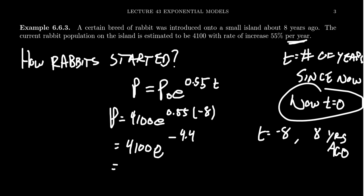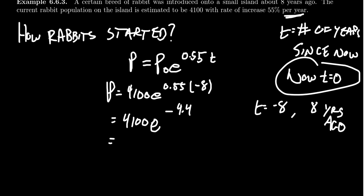I could write this as division, so you get 4100 divided by e to the 4.4, same thing. If you estimate e to the 4.4, you end up with 81.45, and then that's being divided into the 4100. This will give you an estimate of about 50. So we would expect, rounding to the nearest bunny, there was approximately 50 bunnies eight years ago that started this whole population growth.